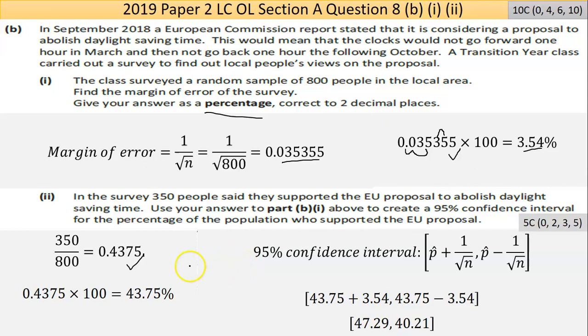We need to find the margin of error range. What was the lowest number of people based on this survey that would have supported it, and the highest number? So we're taking away the 3.54% and adding 3.54%. Do the math on that, you get 47.29% and 40.21%. So your actual figure is somewhere between those two.